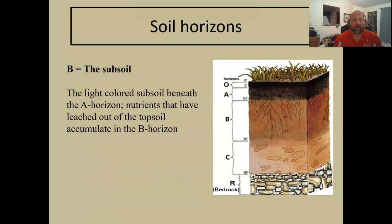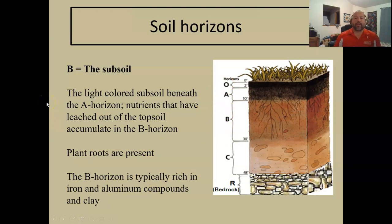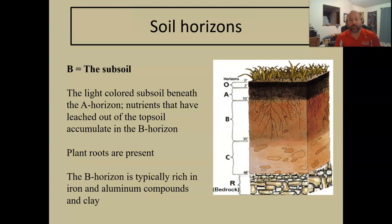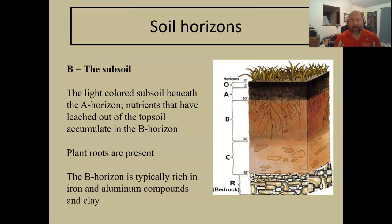Going back to a grassland soil, from O to A to B. The B horizon is a lighter color; nutrients have leached out of the topsoil. You'll still see plant roots down in the B horizon. The B horizon is typically rich in iron and aluminum compounds and has more of a clay component — a heavier amount of clay in these layers. As you go down through the layers, the soils also get more compacted, meaning less pore space for water and air to work through.